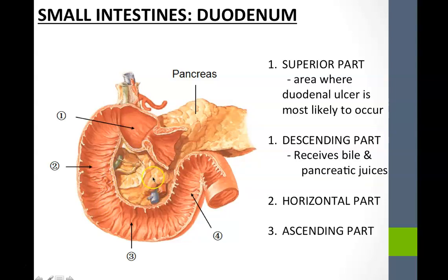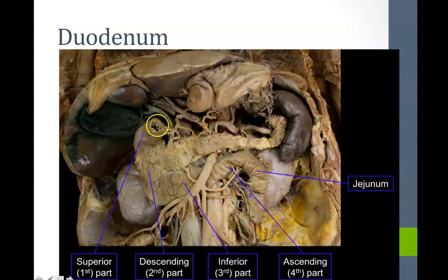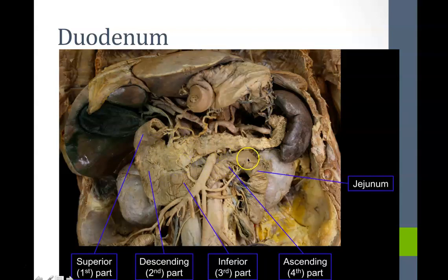Notice how the duodenum cradles what we'll call the head of the pancreas — the pancreas is like its little baby. In the cadaver, here's the stomach, the pyloric sphincter that was cut, the superior part of the duodenum, the descending part, horizontal part, and ascending part, with the head of the pancreas nestled within. Beyond the ascending part is the jejunum.